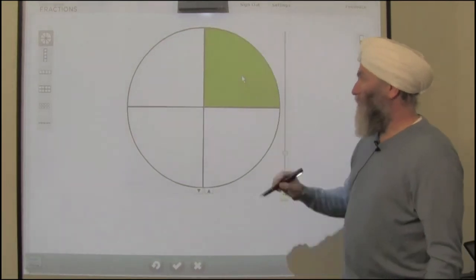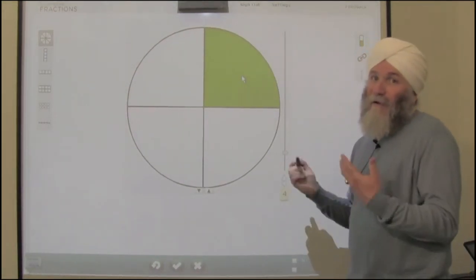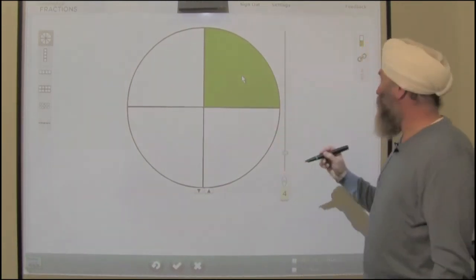So if I shade one of those I'm saying that's one fourth and that's the amount of the cookie that I was saying I was going to eat. So one fourth, one out of the four equal parts is shaded.